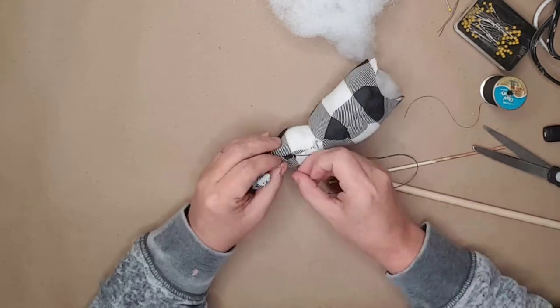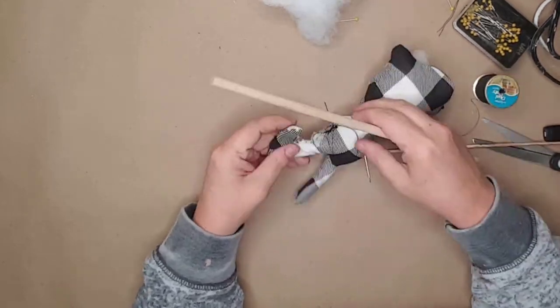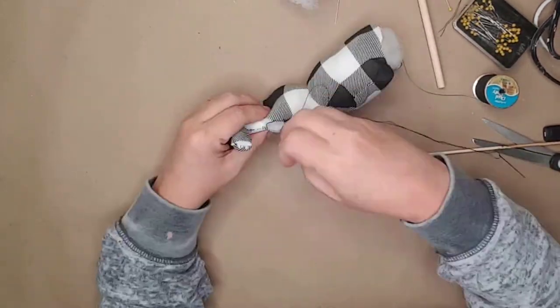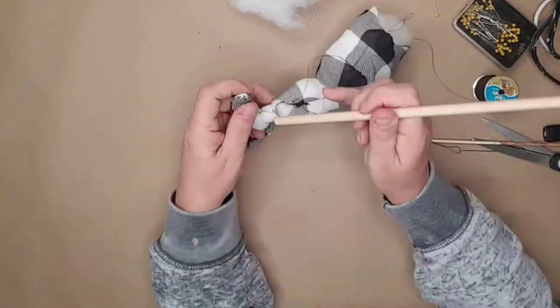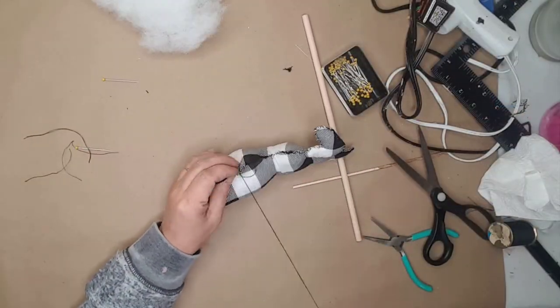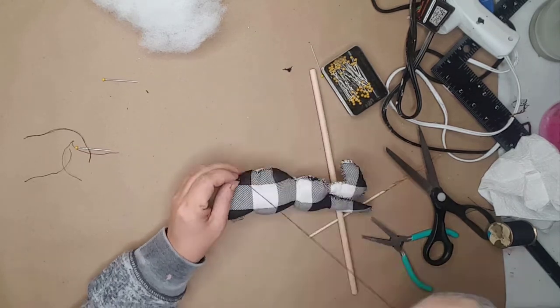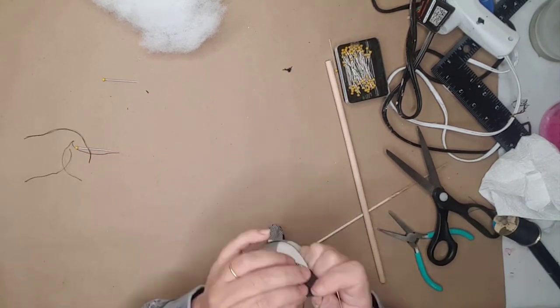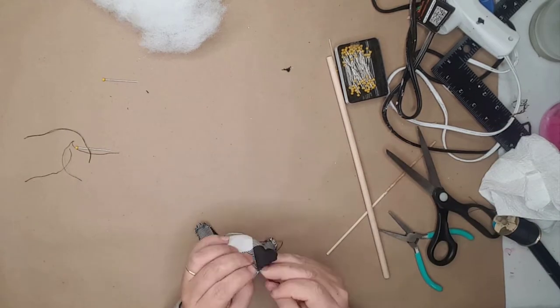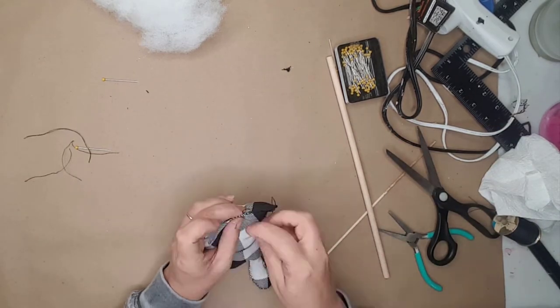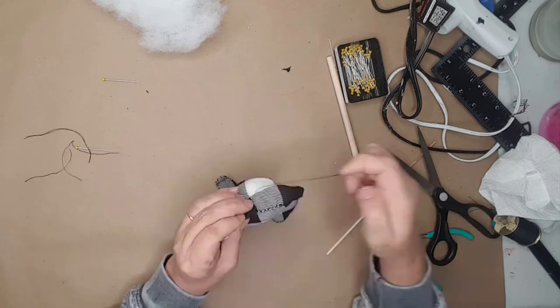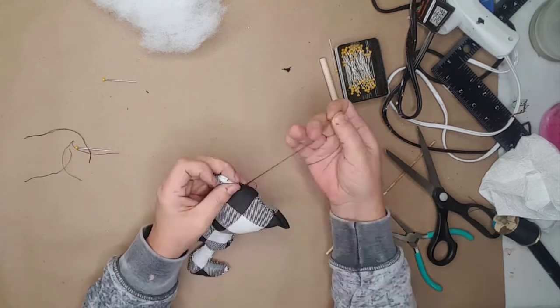I then started adding the stuffing and used a dowel to get the stuffing up into the ears. After I added the stuffing I went back around the outside of the bunny to close up any holes. I wanted the bunny to look handmade and rustic. I continued stitching the entire bunny and closed the hole at the bottom.